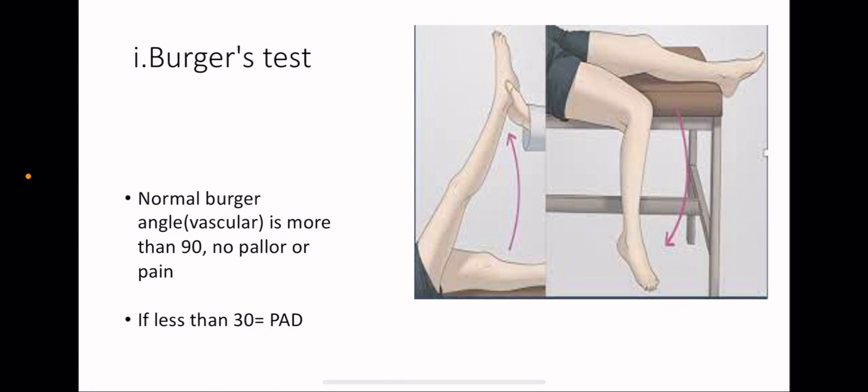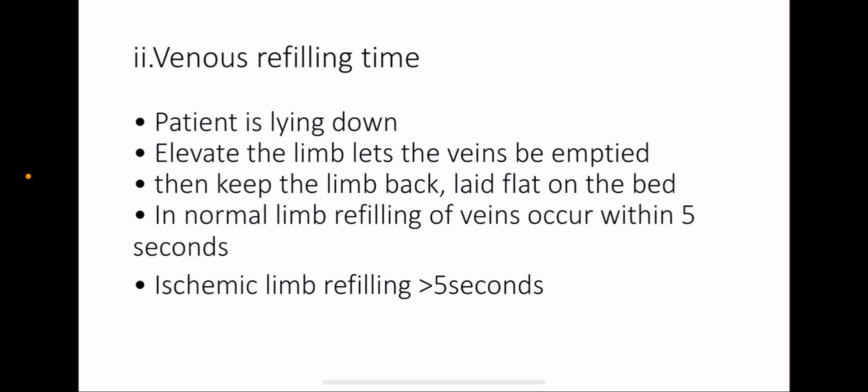For Buerger test, you ask your patient as shown in the picture to elevate his legs and keep elevated for two minutes. If the leg became pale or the patient complained of numbness or pain, this means the test is positive. The angle in which the pallor or the patient will complain, we call this Buerger angle or vascular angle. If you find it less than 30 degrees, which means if the patient complained or you notice paleness in the leg before you reach a 30 degree angle, this means the patient has peripheral arterial disease.